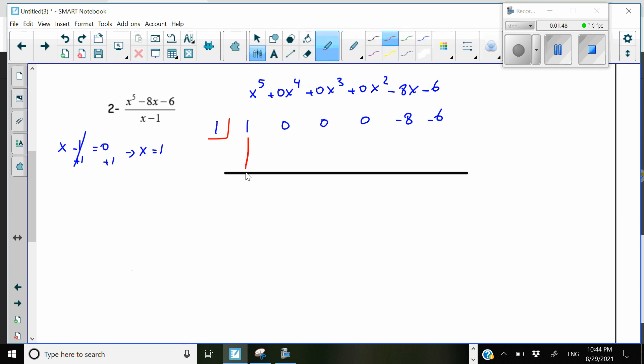So the first one, bring it down here. This will be 1. Then multiply 1 by the corner number. 1 times 1 is 1.